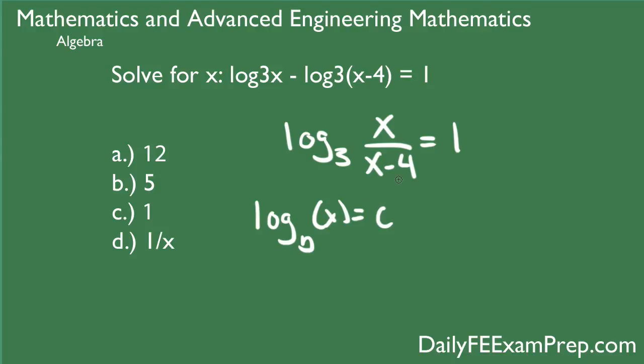So we know that B raised to the C is equal to x. Let's go ahead and input those values right now. Basically what that tells us is that we've got 3, which is our base, raised to the C which is equal to 1. So 3 raised to the power 1 is equal to x over (x-4).